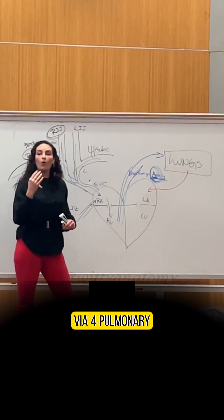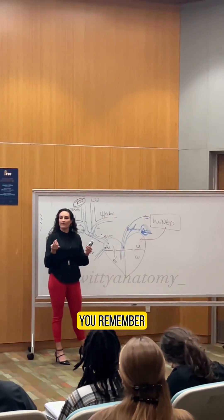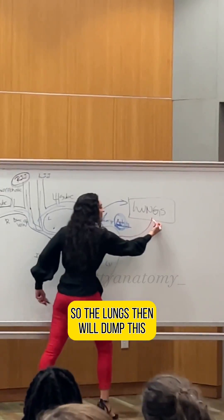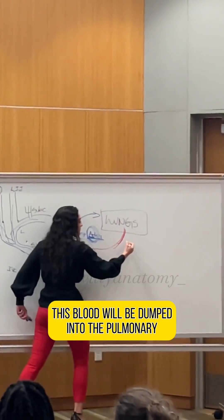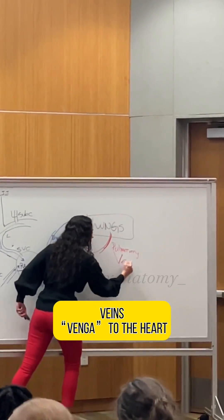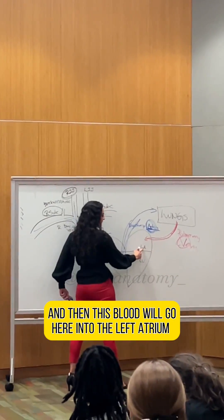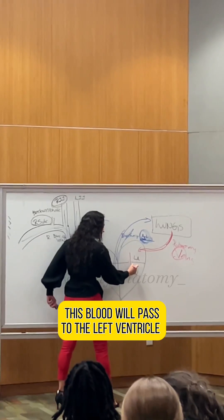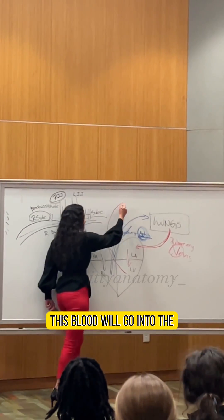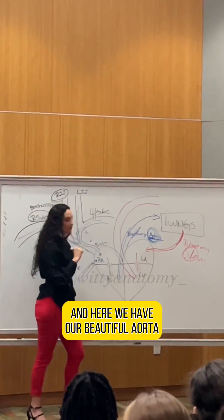It returns via four pulmonary veins — because veins, if you speak Spanish, you remember 'venga,' meaning coming to the heart. This blood is dumped into the pulmonary veins, then goes into the left atrium, passes into the left ventricle, and when the left ventricle contracts, this blood goes into the aorta.